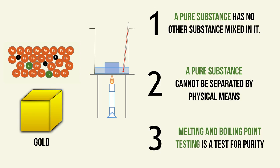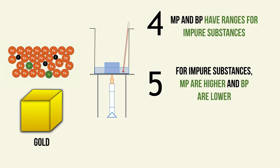To summarize: a pure substance has nothing else mixed in it. A pure substance cannot be separated by physical means, whereas an impure substance can be separated to recover its pure components. Melting and boiling point testing serves as a test for purity — impure substances show a range for both points. Note also that for an impure substance, the melting point is lower and the boiling point is higher than for the pure substance. Thank you very much for watching, good luck in your revision whether mock or finals — do well!